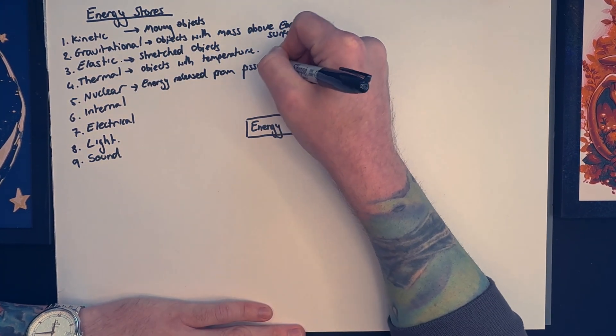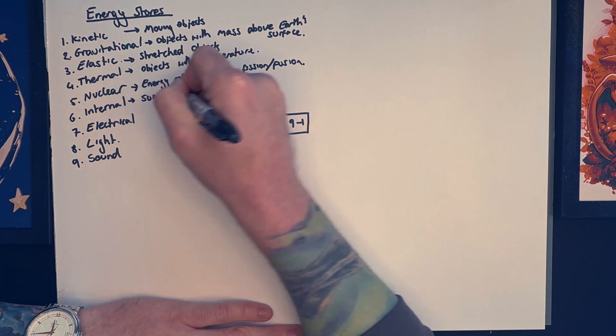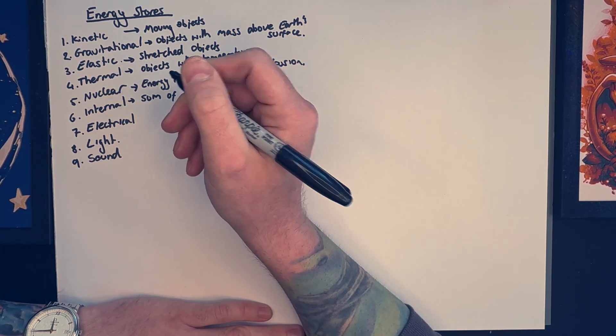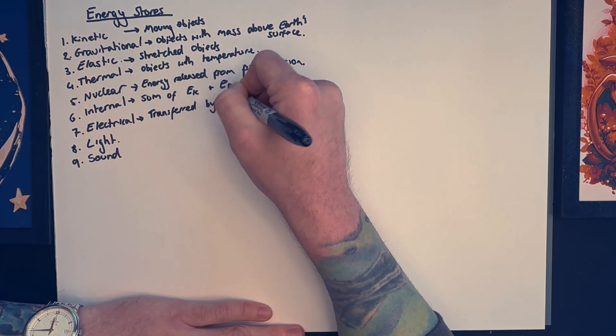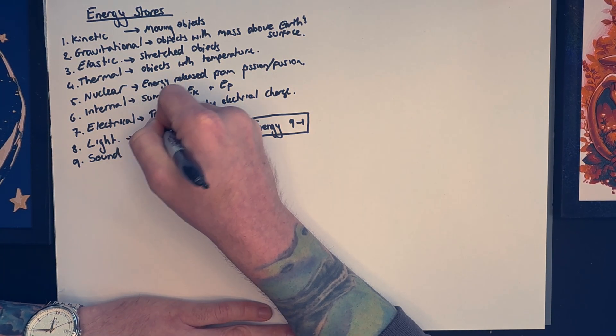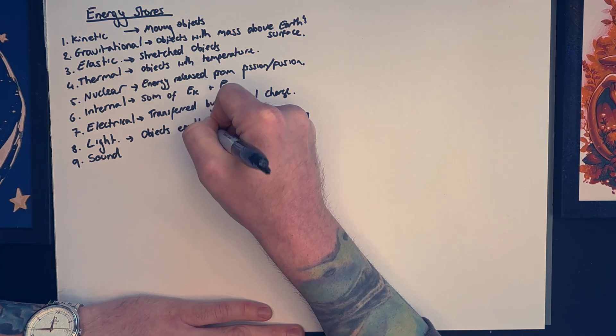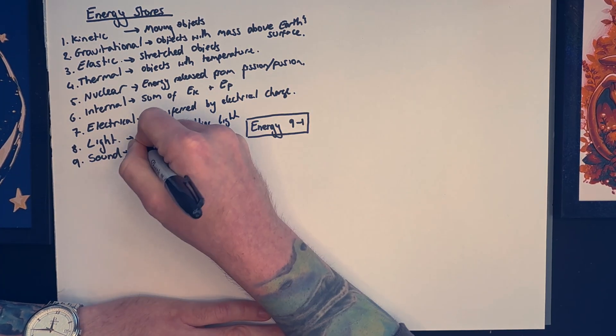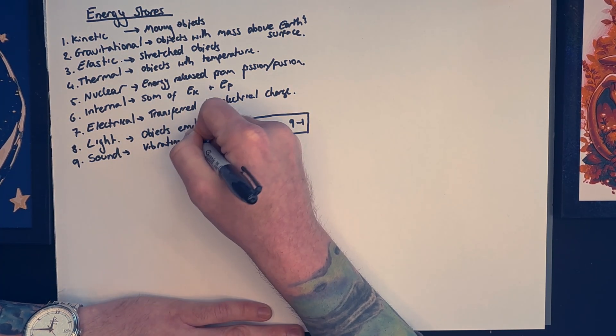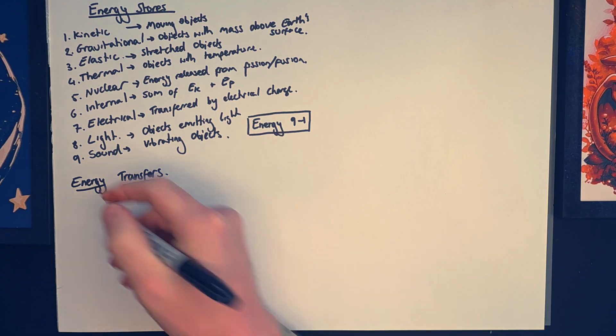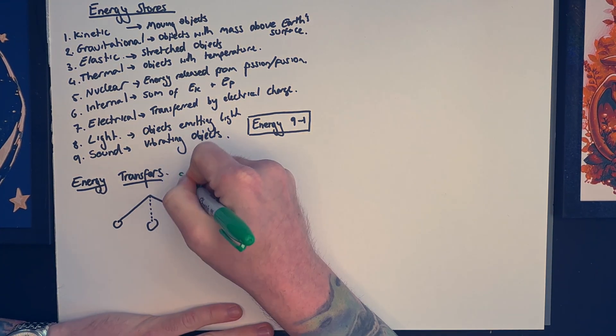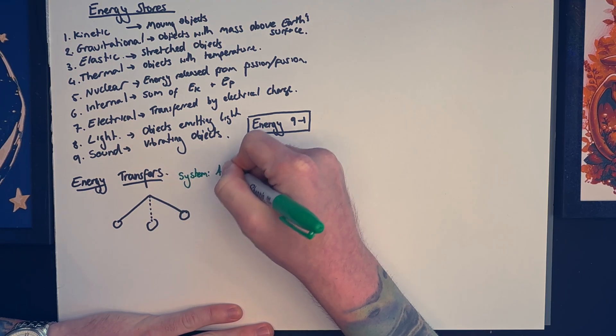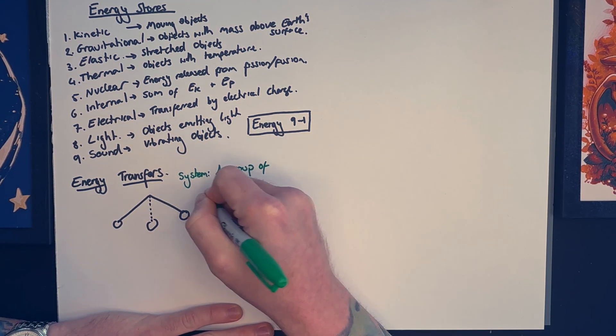It can also be referenced when we're talking about things to do with our human bodies losing energy as we transfer energy to different stores. Next we have electrical energy, that's energy transferred by electrical charge, light energy from any object that emits light, and then sound energy for vibrating objects. So next up we're looking at energy transfers. Energy transfers apply in systems. A system is a group of objects.